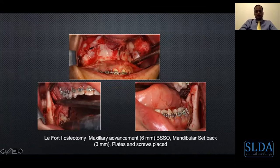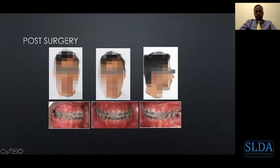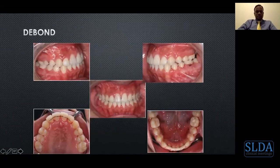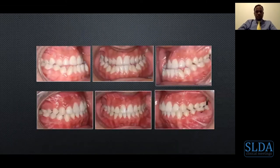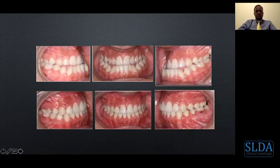Post-surgical result for Case 1: after debonding, you can see well-balanced facial proportions. The pre and post comparison shows a nicely balanced face. The same is reflected in the intraoral pre and post photos. This is a skeletally imbalanced patient who required surgical intervention — a clear example of how the orthodontist and surgeon must work together to achieve the desired outcome for a Class III skeletal case.